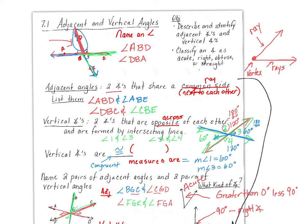The next one says: tell whether the angles are adjacent or vertical, then find X. They're talking about this angle and this angle — they sit right next to each other, so these would be adjacent. Notice that these two angles form a straight line. A straight line measures 180 degrees, and I subtract off 132 degrees, so angle X has to be 48 degrees.